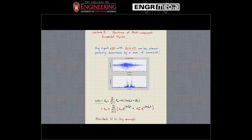It should seem obvious that if we make N really small, maybe a very complicated signal we won't be able to represent well. The plot I'm showing in the middle of the screen — on the top you see the time domain signal of my voice just saying the word 'hello.' And you can kind of see it's a complicated signal.